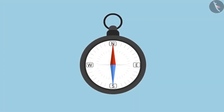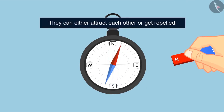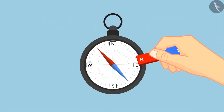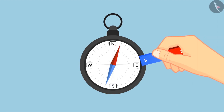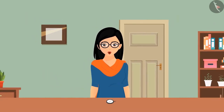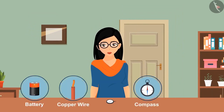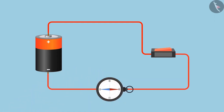What would happen if a magnet was brought near this compass? They can either attract or repel each other. If the north pole of the bar magnet is brought near the compass, it will attract the south pole of the compass towards it. Similarly, the south pole of the bar magnet will attract the north pole of the compass. To perform Oersted's experiment, we need a battery, a piece of thick copper wire, a compass, and connecting wires. Place the compass over the copper wire so that the needle and the wire are parallel to each other. As soon as we put on the switch, we see a deflection in the compass needle.